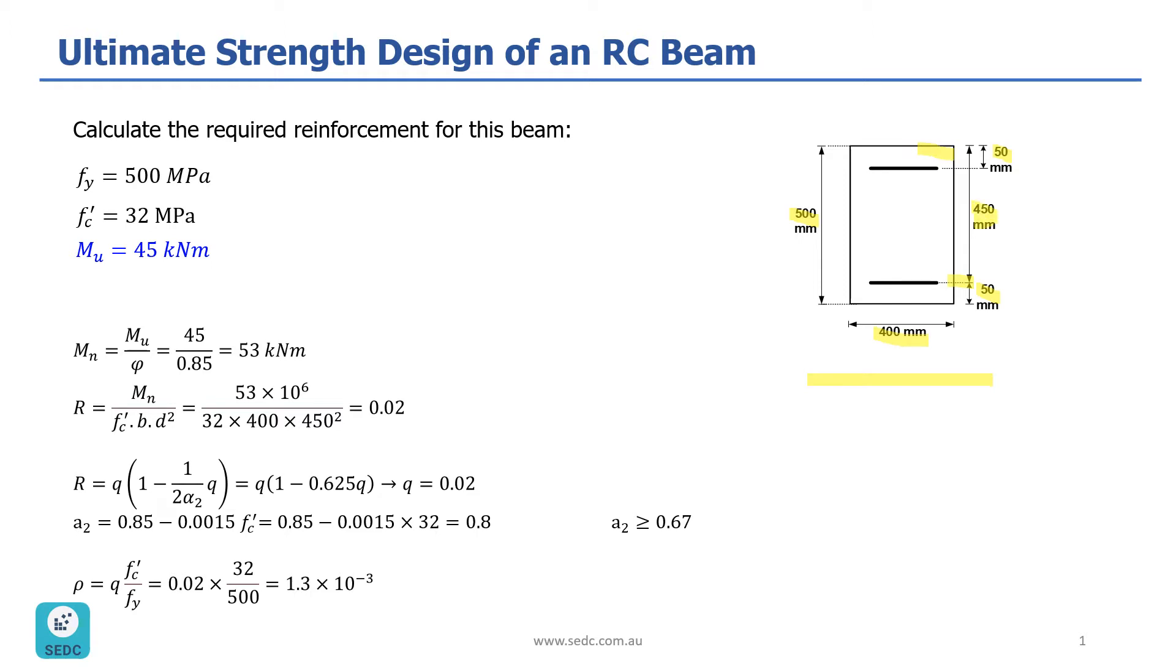Fy, which is yield stress of the steel reinforcement, is 500 MPa, and the concrete strength is 32 MPa. We want to design this section for the bending moment of 45 kilonewton meter.